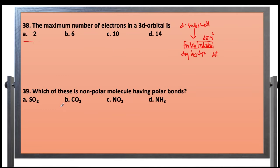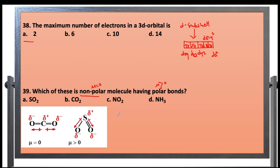Which of these is a non-polar molecule having polar bonds? The most polar molecule is determined by the magnitude of the dipole moment. The structure of carbon dioxide has a linear structure, and the central carbon atom has no lone pair of electrons.